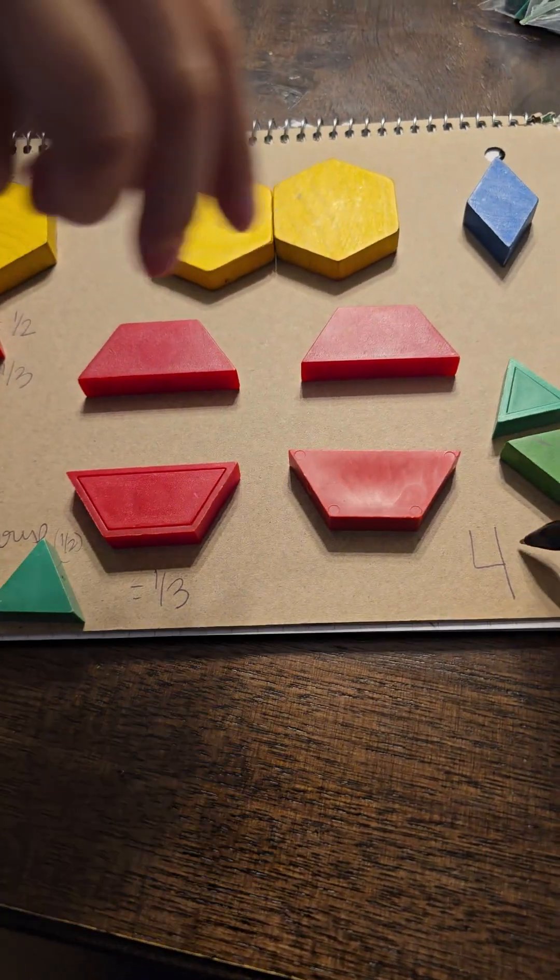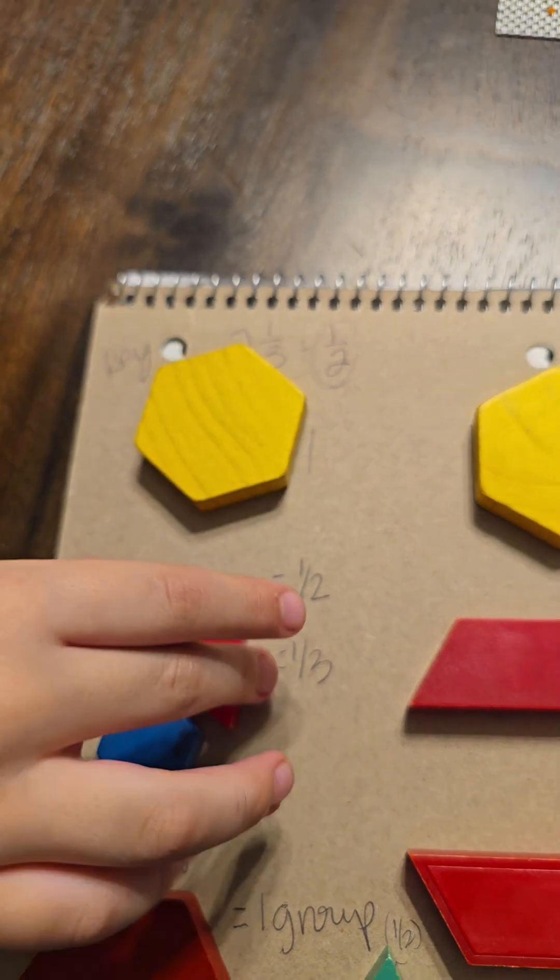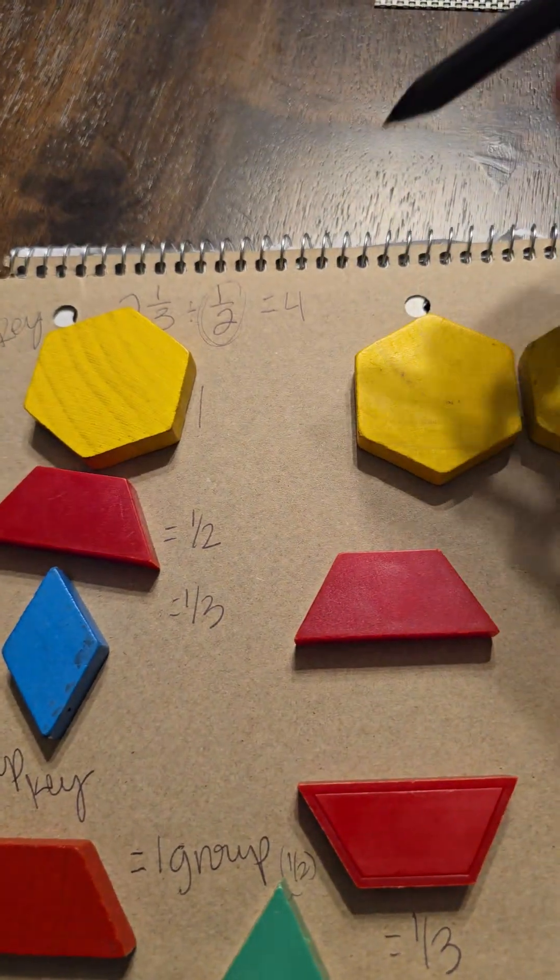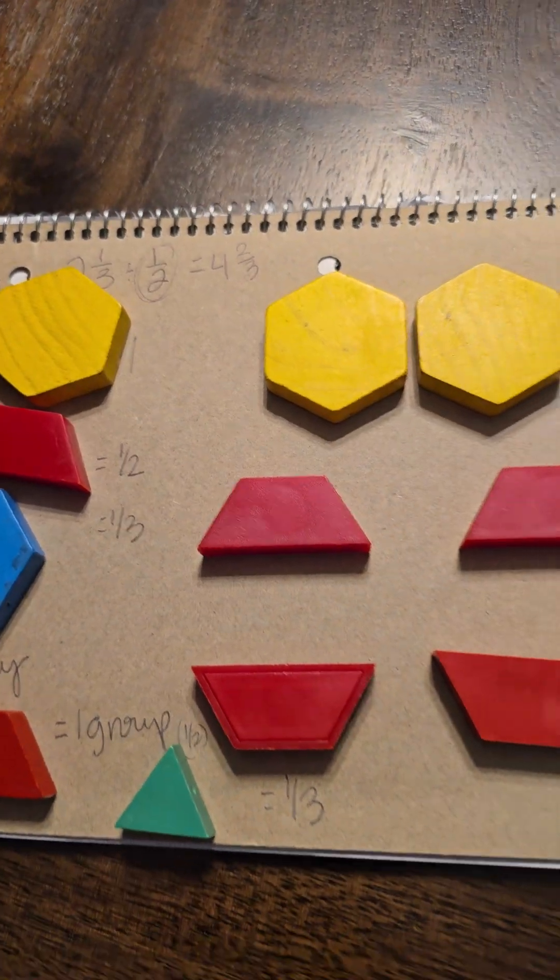So four and two thirds. So if we look right here, two and one third divided by one half equals four and two thirds. Thank you for helping me.